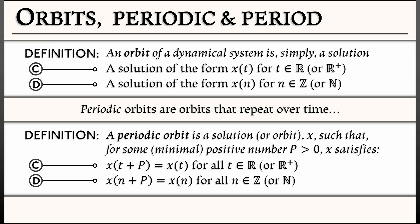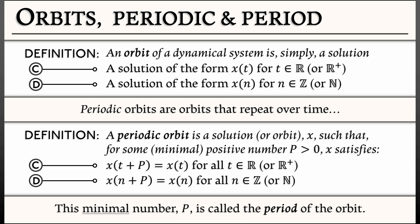Why do I keep saying positive minimal number? Well, let's say you've got a periodic orbit of period 3, so that after 3 time steps you're back to where you started. It's also getting back to where it started after 6 or 9 or negative 3 time steps. So in order to have an unambiguous notion of period p, we're going to take the minimal such positive number p for which these statements hold.